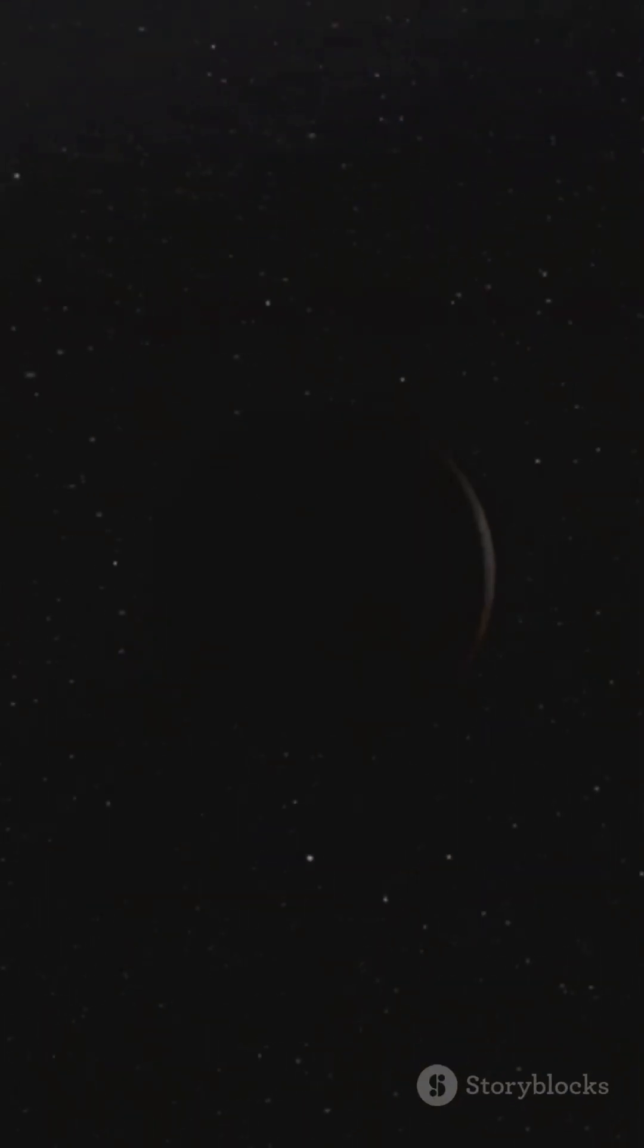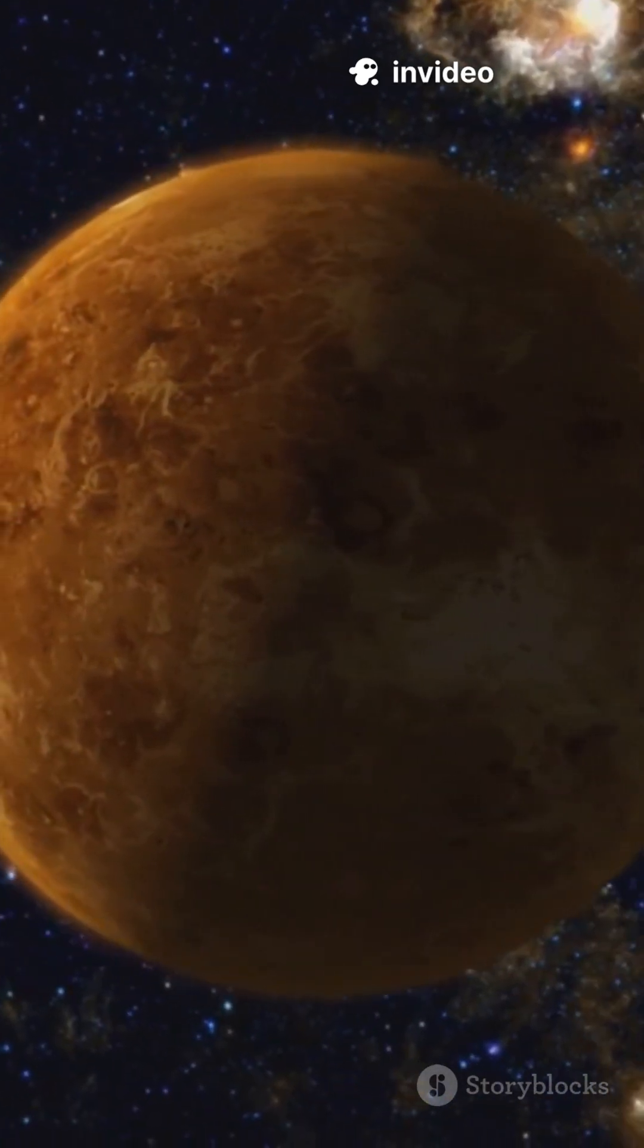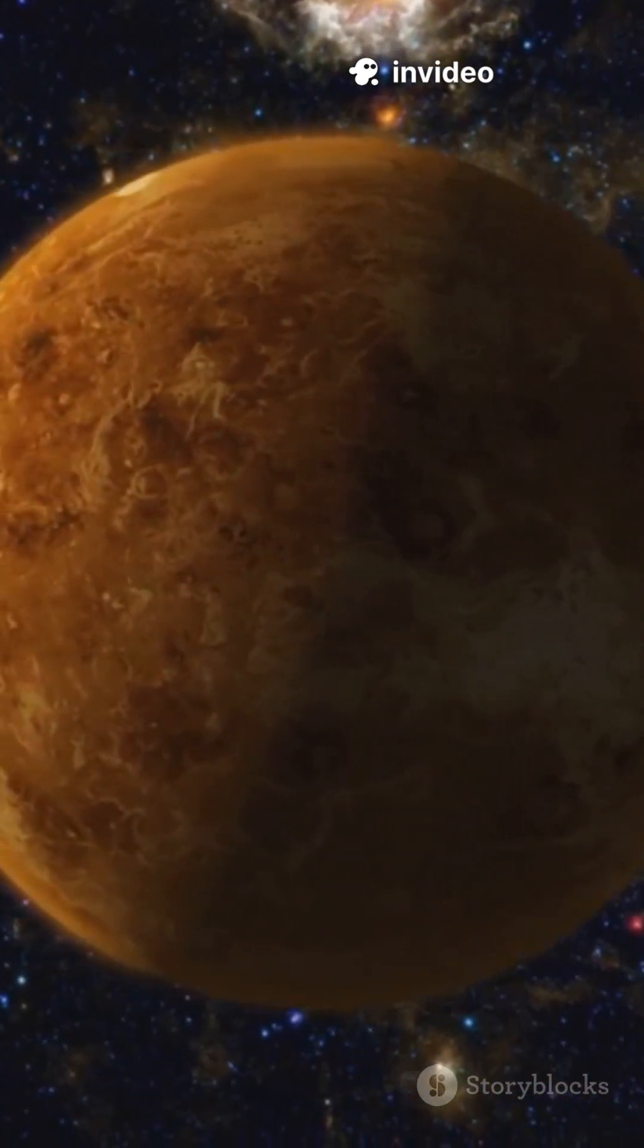Venus spins so slowly that it takes about 243 Earth days to complete one full rotation. That's one Venusian day.